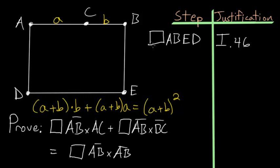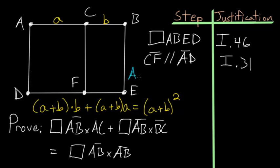And from here, let's create a line through the point C that's parallel to the line AD. And we can call that line CF. So it's parallel to the line AD, and this comes from Book 1, Proposition 31. And I also want to note that since we have the square ABED, all of its sides are equal to each other. So we can say that AB is equal to AD, and these are equal to DE and BE.